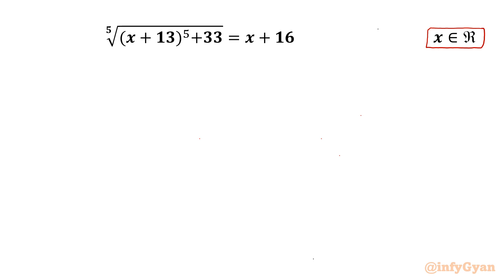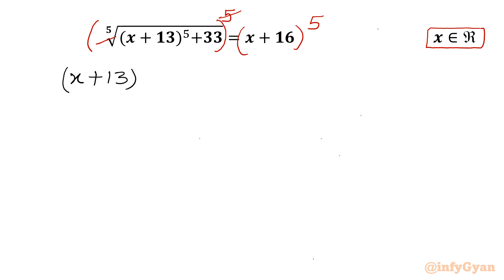Let us get started by raising both sides to the power 5. On the LHS we can cancel the 5th root with power 5. So our equation becomes: (x + 13)^5 + 33 = (x + 16)^5.